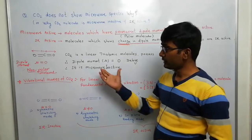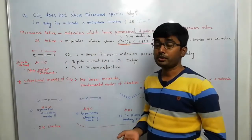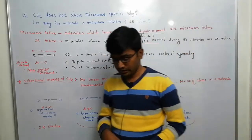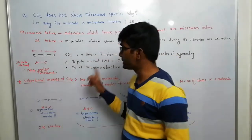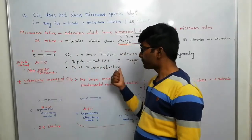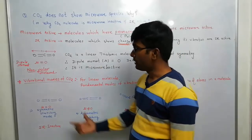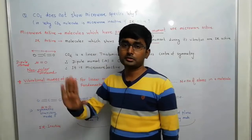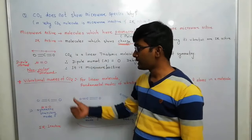So the first part is clear: why is CO2 microwave inactive? Because it is a linear triatomic molecule and it possesses a center of symmetry. Due to this, the dipole moment of the CO2 molecule is 0, hence it is microwave inactive. Now let us go to the second part: why does the CO2 molecule show IR spectra?